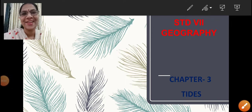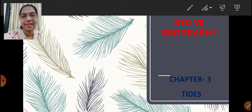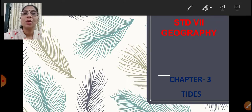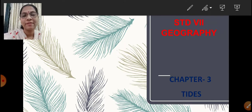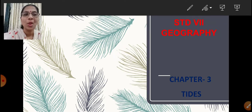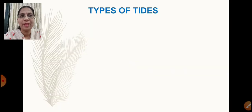Hello students, today we will go ahead with the second part of our third chapter on tides. In the first part we learned how tides occur, what tides are called, and their duration. In the first part we learned about high tides and low tides — when the water level is closest to the coast it is high tide, and when it is far away it is low tide. Today we are going to learn about the different types of tides.